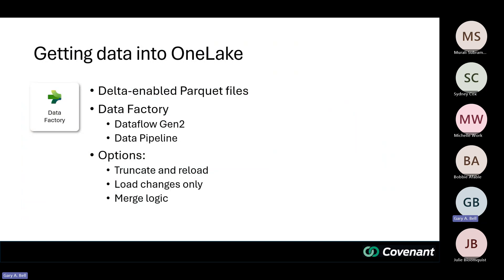In Data Factory within Fabric there are two options. Data Flow Gen 2 looks like Power Query — if you've ever written Power Query, you pop up the Transform Data button in Power BI, and that's essentially what a Data Flow Gen 2 looks like in the cloud. You pull in your data from a source, apply all the transformation steps, and whereas in Power BI that just goes into a table in your semantic model, in Data Flow Gen 2 you get to add a destination.